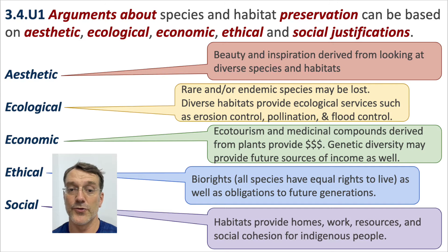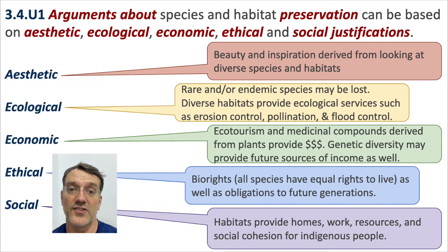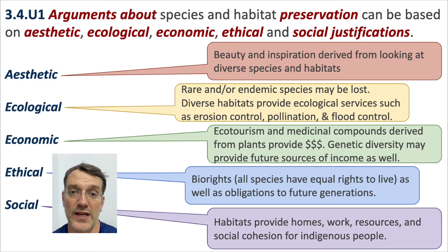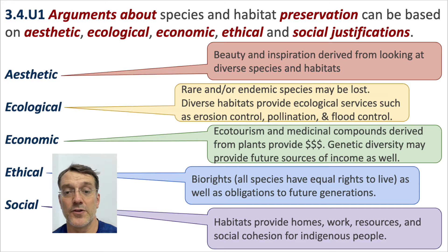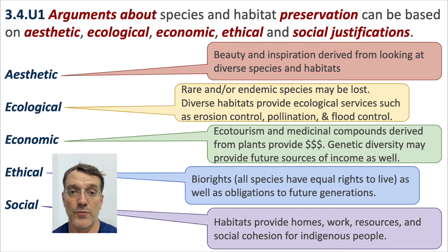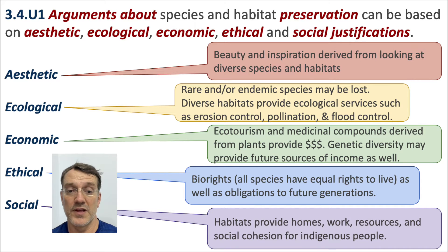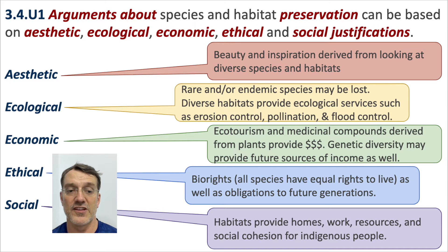The ecological perspective argues that rare or endemic species may be lost and that it is necessary to conserve the habitat or species because of their role in food systems and productivity. From a technocentric perspective, you might argue from the economic point of view about ecotourism and medicinal compounds derived from plants — those are ecological goods we derive from protecting habitats. There's also the ethical argument about bio-rights, which skews towards the ecocentric end of the spectrum.